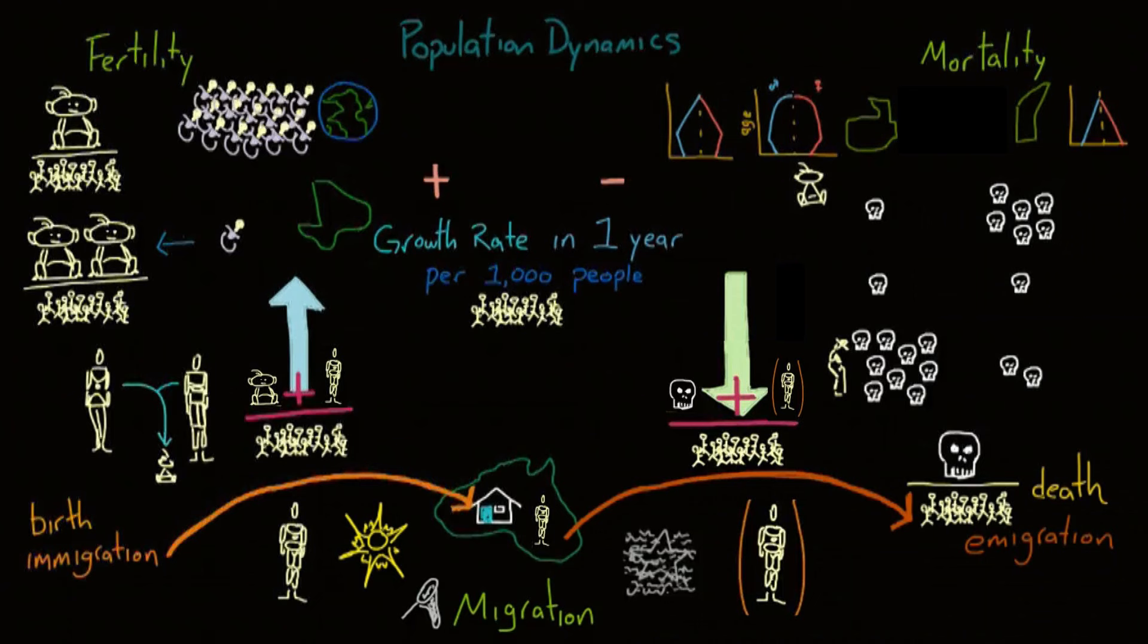If we want to look at this as an equation, you have the initial population plus the number of births minus the number of deaths plus the number of people immigrating into the country minus the number of people emigrating out of the country. So now you have your current population. And if this current population is less than the initial population, then you get a negative growth rate for that country.